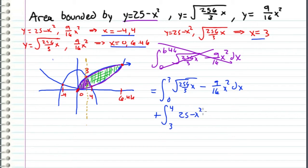And now the top function is the downward parabola, so 25 minus x squared. And the bottom function is the upward parabola, so minus 9 sixteenths x squared dx. So this gives us 2 thirds times 3 over 256 times 256 over 3x to the 3 halves from this first term.